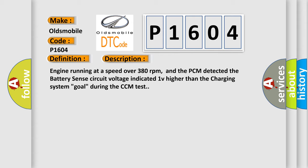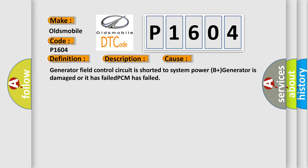This diagnostic error occurs most often in these cases. Generator field control circuit is shorted to system power. B plus generator is damaged or it has failed.